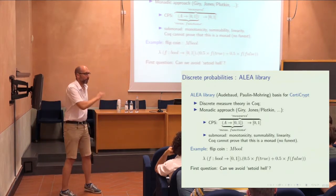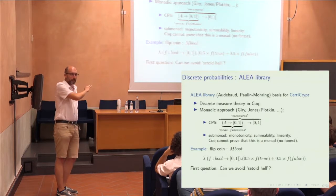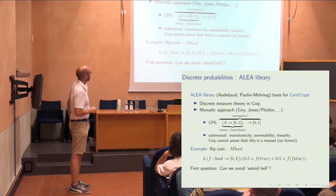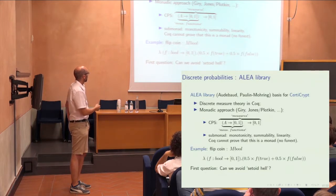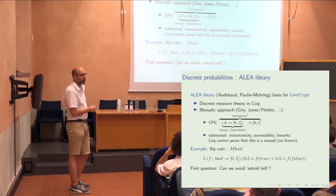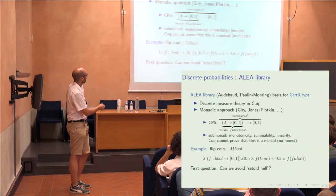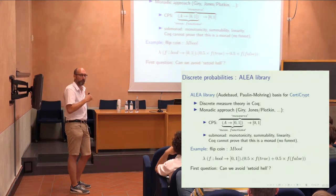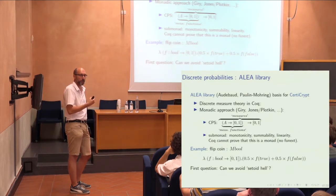There's a library in the Coq proof assistant for discrete measure theory using the monadic approach. You look at certain measures — this is part of the CPS translation — and take a sub-monad that is monotone, summable, and linear. The problem is that Coq cannot prove that this sub-monad is actually a monad because you don't have functional extensionality. So current Coq type theory doesn't allow you to prove even basic properties of deterministic programming languages. If you want to prove things about Haskell programs or monads, you usually need functional extensionality, which you don't have available.